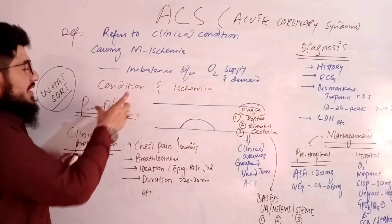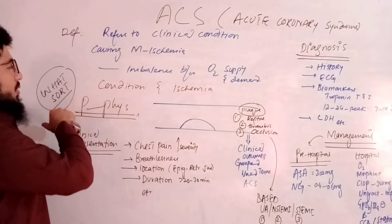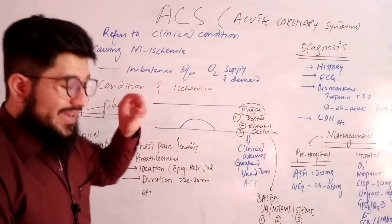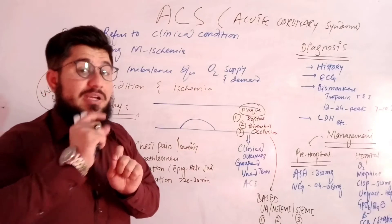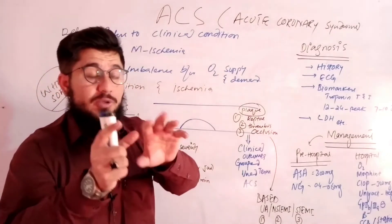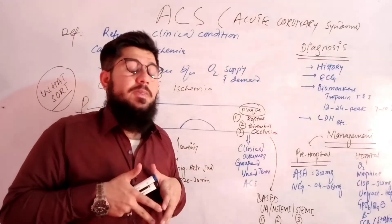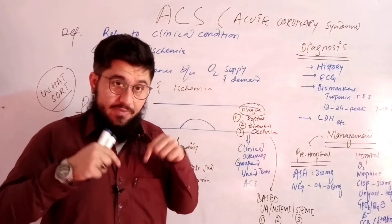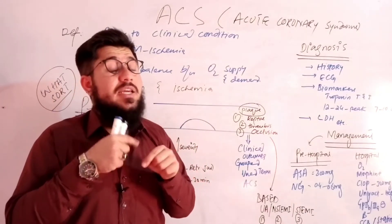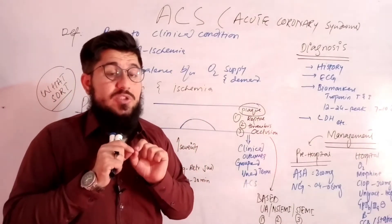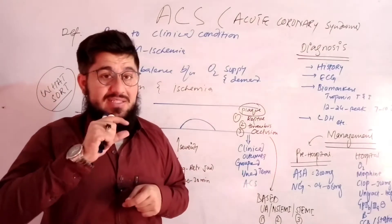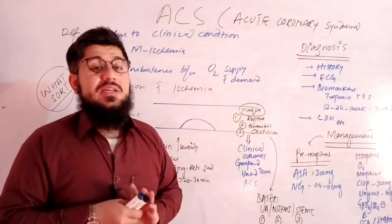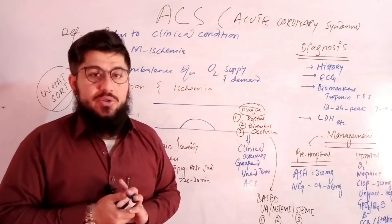Now let's come towards the pathophysiology. We know there are certain blood vessels responsible for supplying blood to the heart. The heart supplies blood to the entire body, and it also supplies blood to itself. The blood vessels the heart uses to supply blood to itself are known as coronary arteries.